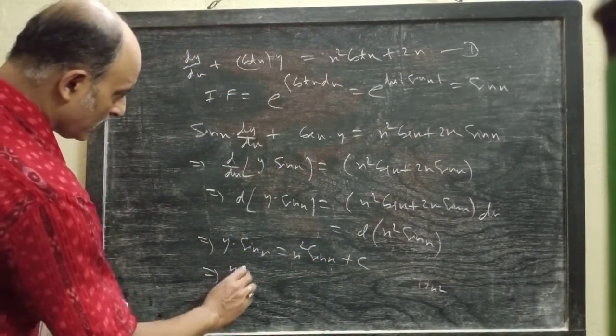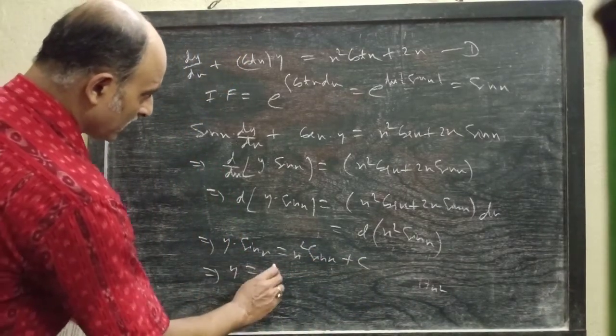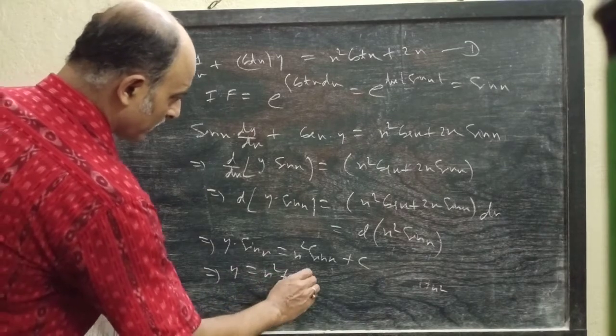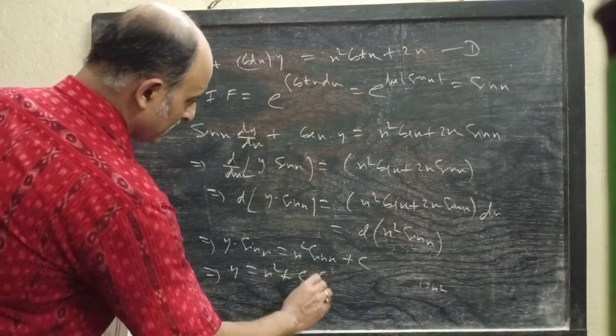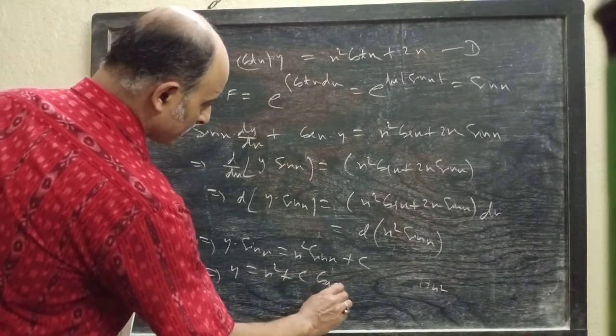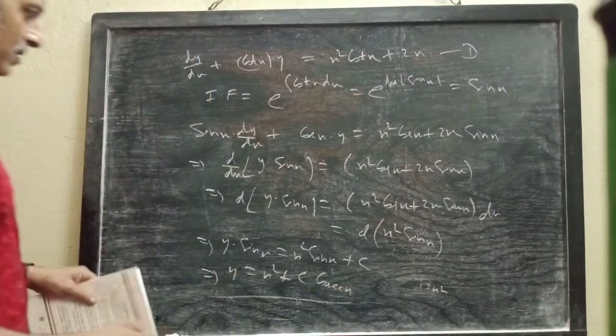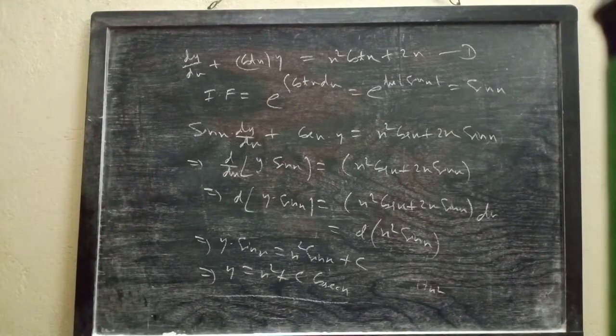Or you can write y = x² + c × cosec(x). This is our general solution.